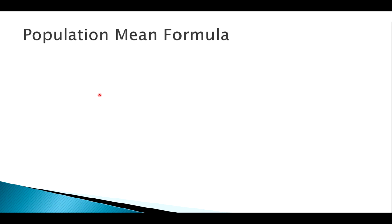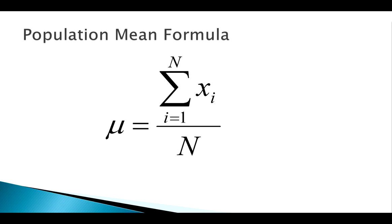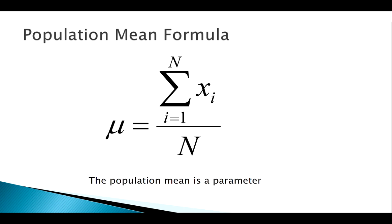When working with data we have population parameters and sample statistics. Our population mean is denoted by the lowercase Greek letter mu (μ). The formula uses summation notation: from observation x₁ all the way through observation xₙ, add all those up and divide by N. That gives us the population mean, which is a parameter — a number that describes the population.